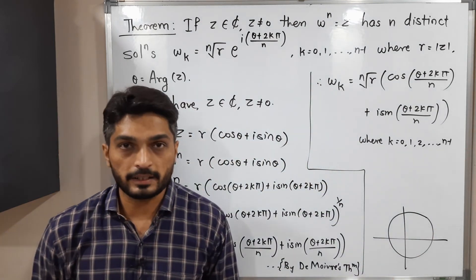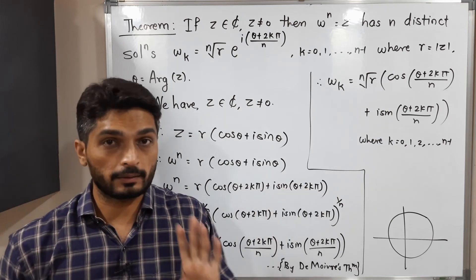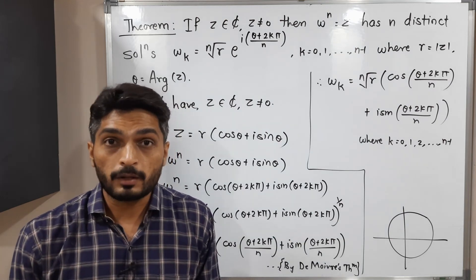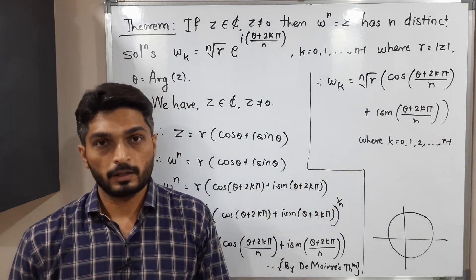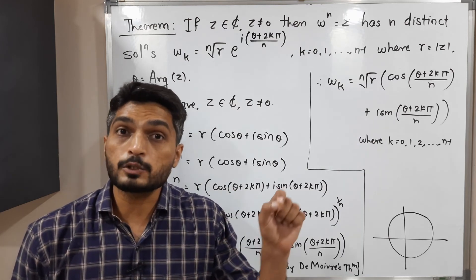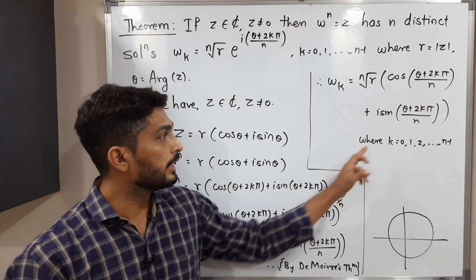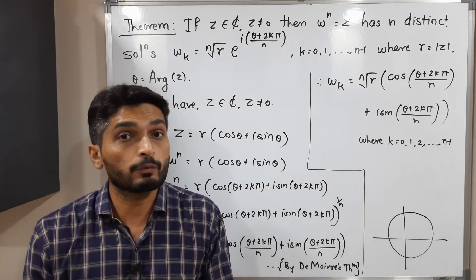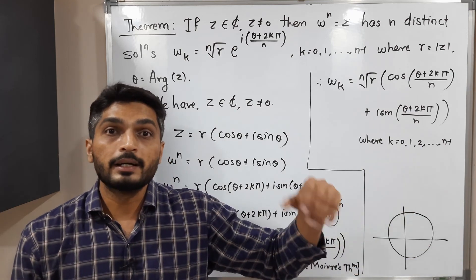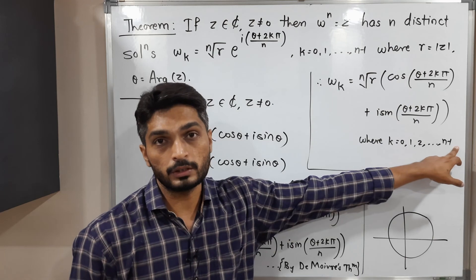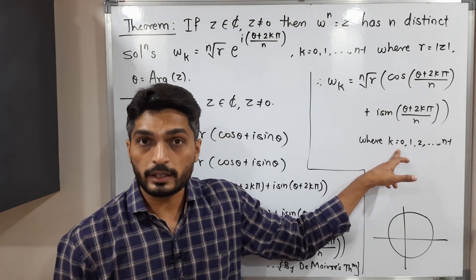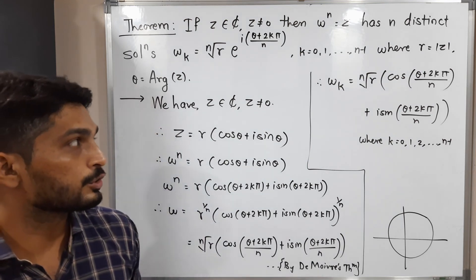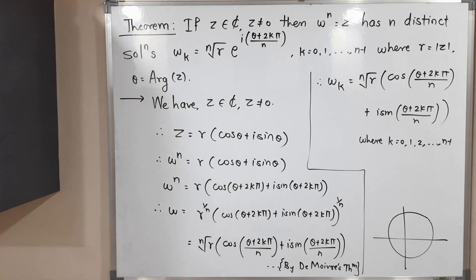If we go for k equal to n, we will get the same solution as k equal to 0. If k equals n plus 1, we get the same solution as k equal to 1. That means the first n solutions are distinct, but the next solutions start repeating. So we only get n number of distinct solutions. These are the required answers.